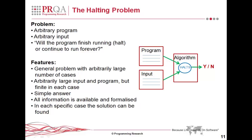So we can see some features of this problem, which are very similar to the one that I've already presented. It's a general problem with an arbitrarily large number of cases. Each specific program with each specific input represents a specific instance of the problem. Both program and input can be arbitrarily large, but they are finite in each case. And the answer is fairly simple — it's simply a yes or a no.